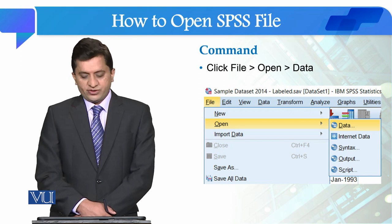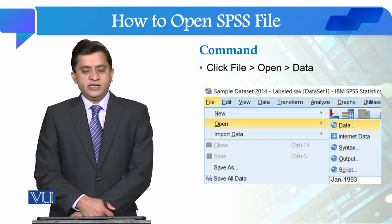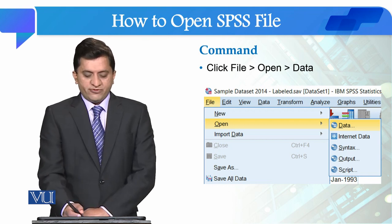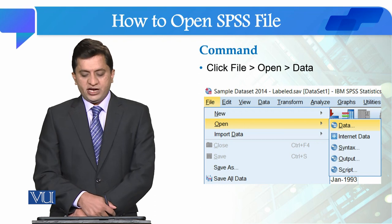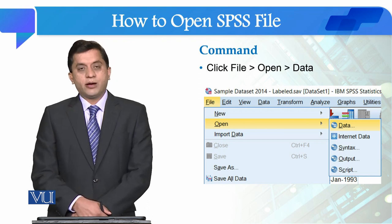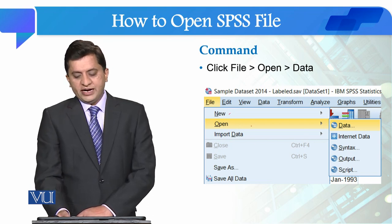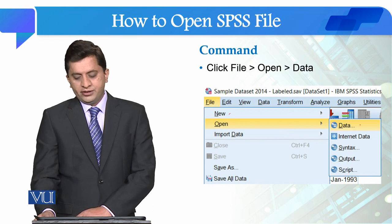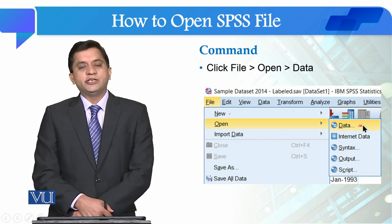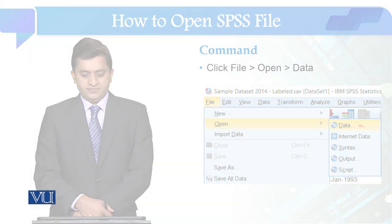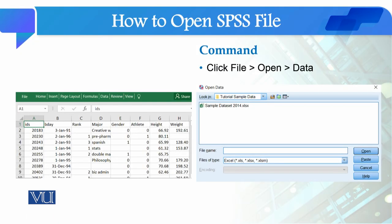For this, what command will you use? You will go to Data View, and there on the first tab — File — you will click on it. After that, three commands will appear before you: New, Open, and Import Data. You will click on Open, then it will say Data — click on that and it will ask you for the location of the data file.